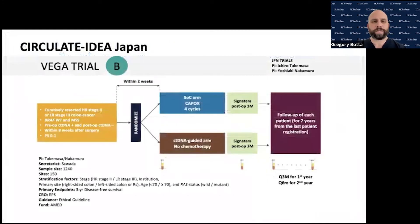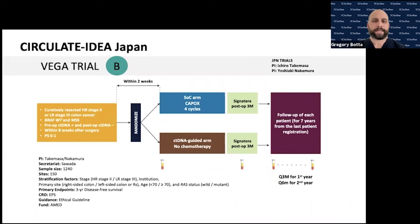The Circulate IDEA Japan VEGA trial is evaluating whether patients with high-risk stage two and low-risk stage three colon cancer who have ctDNA positive pre-operatively and then negative post-operatively should receive four cycles of CAPOX or no chemotherapy, following them with the Signatera ctDNA test over time. The goal is to determine whether we need to escalate certain patients' therapy or de-escalate others' based on ctDNA.